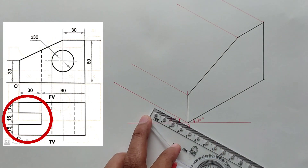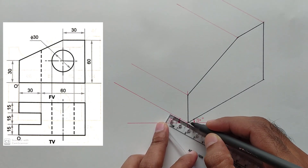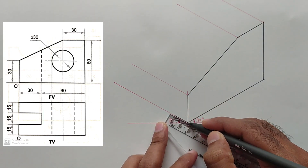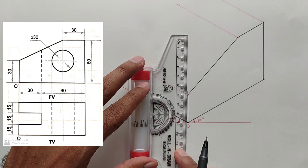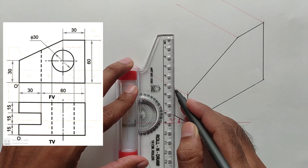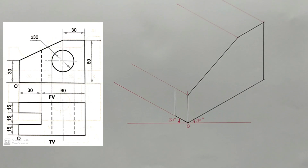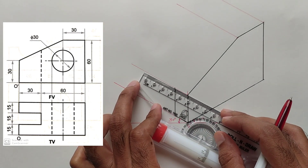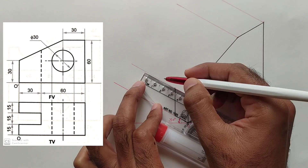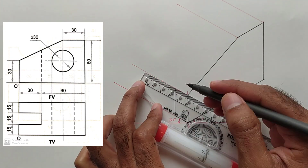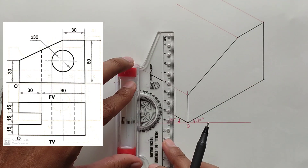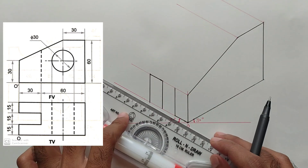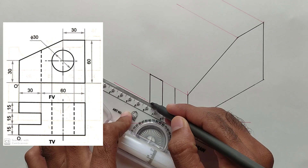Now observe the top view — mark the 15 mm distance from the origin point and make it dark. Draw a vertical line and make it dark. Then measure 30 mm and 45 mm distances from the origin point, mark those points, and draw the lines accordingly, making them dark.